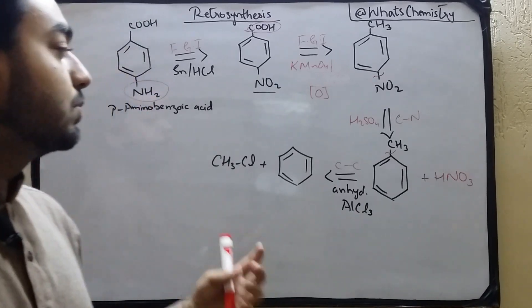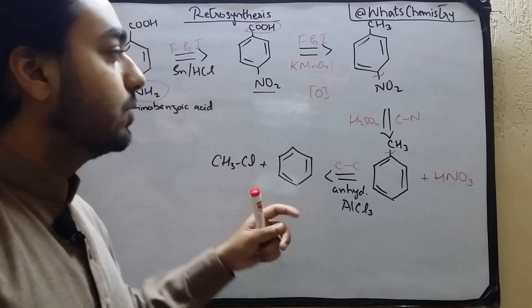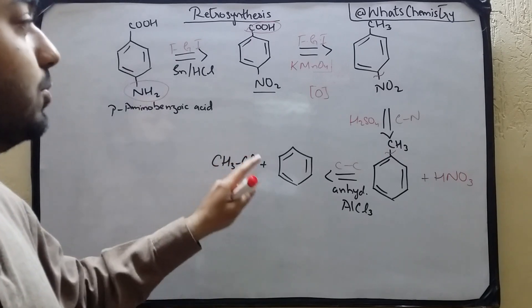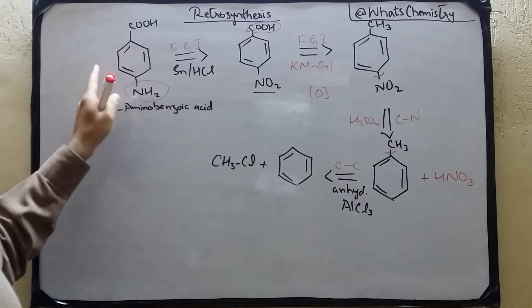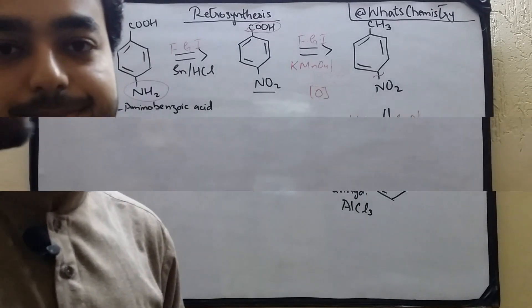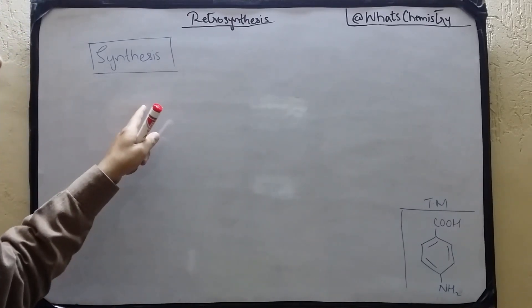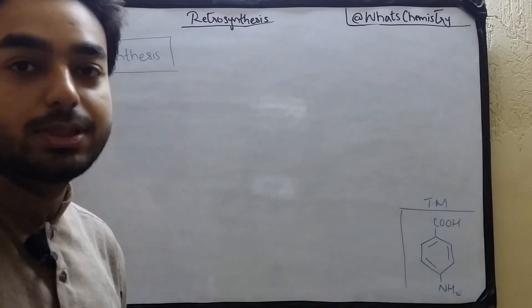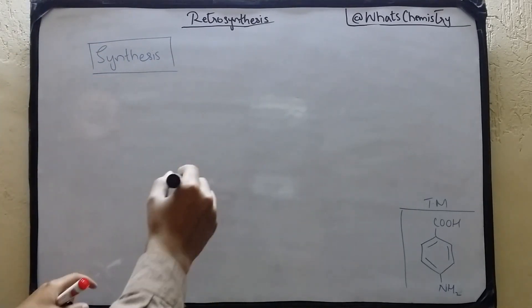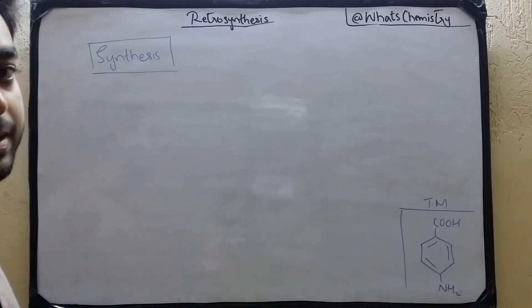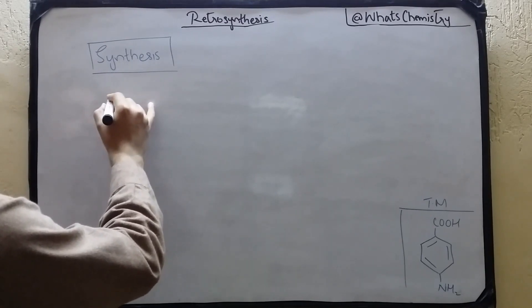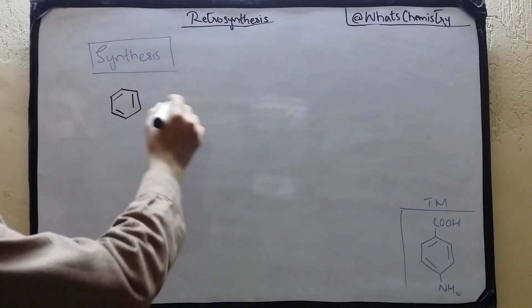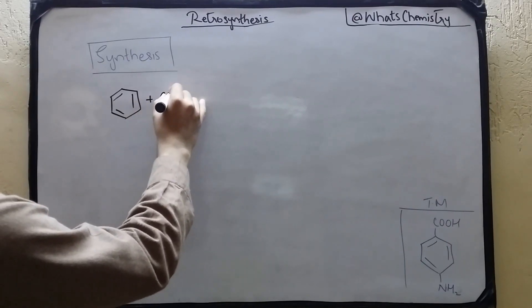Both benzene and methyl chloride are easily available in the lab, so we do not need to break it further — our retro analysis is completed. Now we will do the synthesis, moving from benzene to our target molecule, para-aminobenzoic acid.